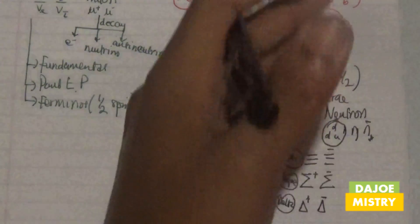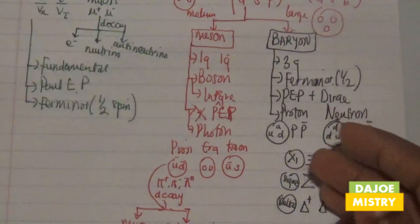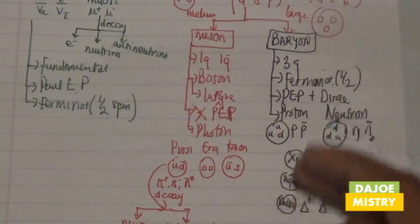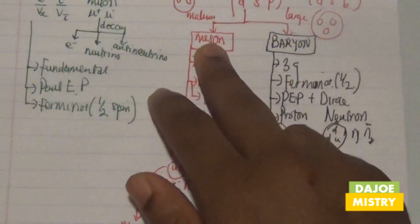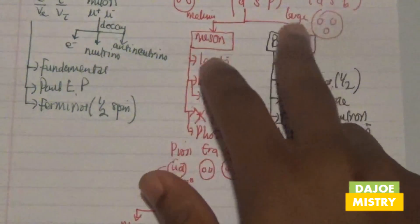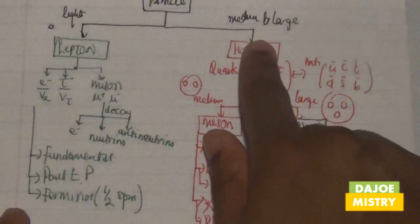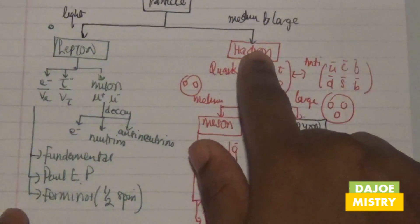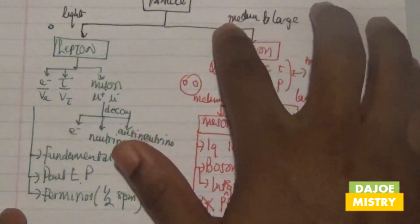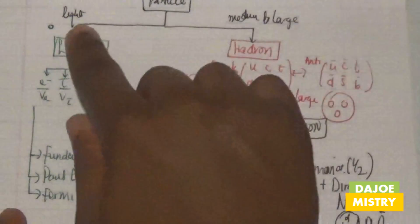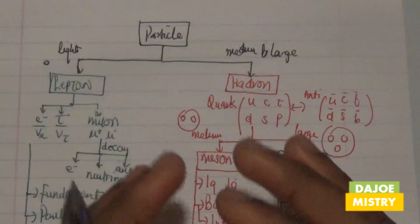These are the characteristics and various types of baryons. Baryons are differentiated from mesons in terms of their medium versus large size, and hadrons overall are differentiated from leptons in terms of being medium to large versus being light.